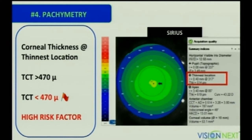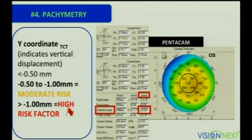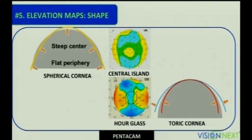The pachymetry thinnest value is not a direct indicator of whether you can do refractive surgery, but if the thinnest is less than 470 microns that is definitely abnormal — a red flag. Next, look at the Y coordinate to see the inferior displacement of that thinnest point. If it is less than minus 0.5, that is normal; more than minus 1 is definitely abnormal. The most important feature distinguishing Scheimpflug imaging from others is the elevation maps.